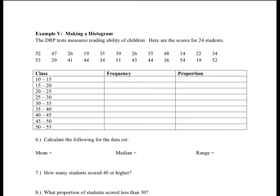Example 5 walks through a recap of everything we've learned. This represents test reading ability in children, with scores for 24 students. First, create a frequency chart breaking students into different classes, then figure out their proportion. Once done, figure out the mean, median, and range for this data set and answer the following questions. After you've figured out your frequency chart, unpause the video and make sure it's correct before continuing.